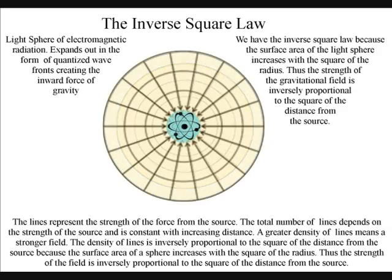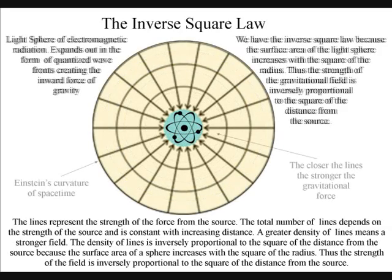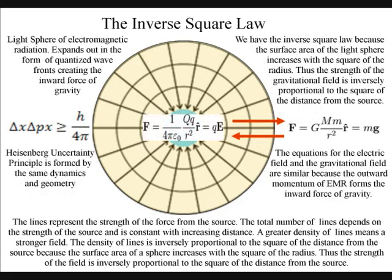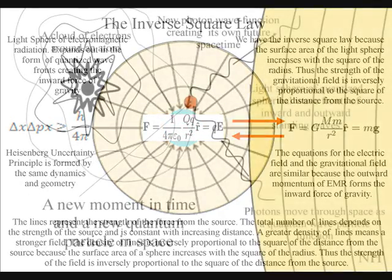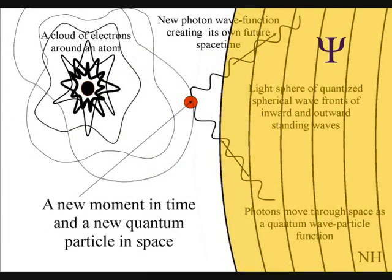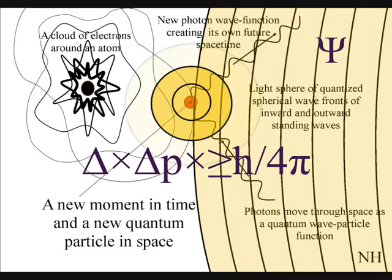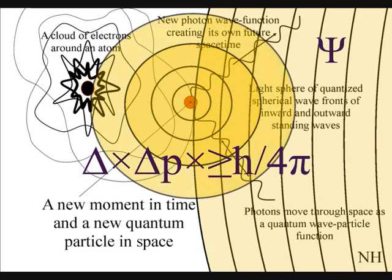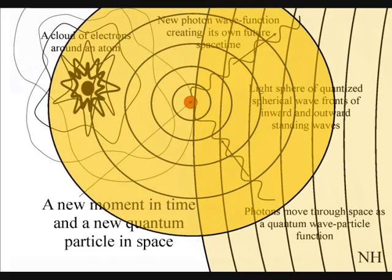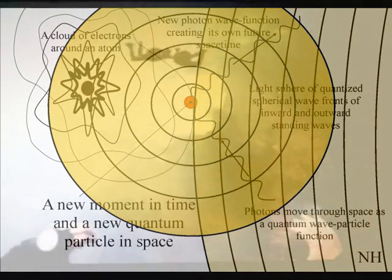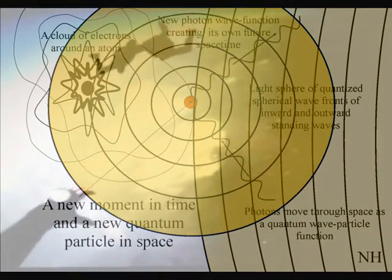There is no mysterious action at a distance. The gravitational field will work at the speed of light because it is an integral part of one universal process with the electromagnetic force. We have one universal process that begins with the quantum wave particle function, or probability function of quantum mechanics, expanding out as an inverse sphere, and ends with the inverse square law of gravity and Newton's third law of motion.